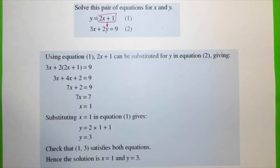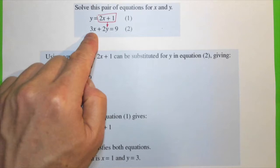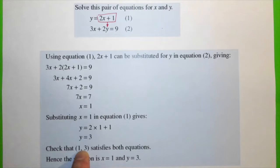The solution is x equals 1 and y equals 3. We need to check that this satisfies equation 2 as well. 3 times 1 is 3, and 2 times 3 is 6, therefore 3 plus 6 equals 9. Yes, this satisfies equation 2. Therefore, the solution is x equals 1 and y equals 3 for this pair of simultaneous equations.